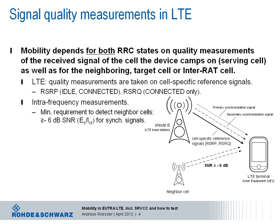In terms of other radio access technologies, the quality measurements are of course different than those described for LTE. All related measurements that the terminal has to carry out, depending on which access technologies are supported in addition to LTE, are specified in 3GPP's technical specification 36.214 for physical layer measurements.